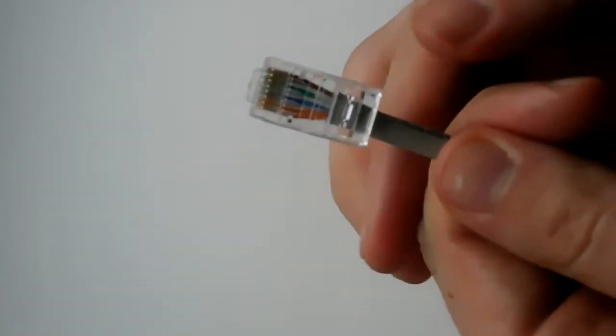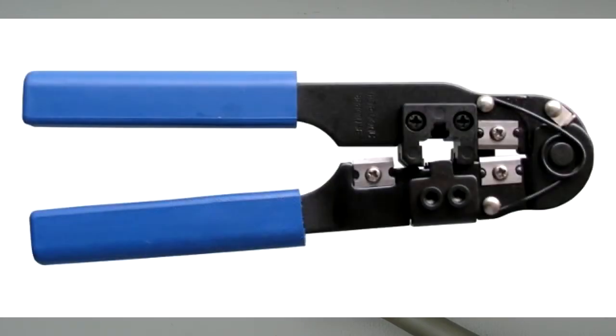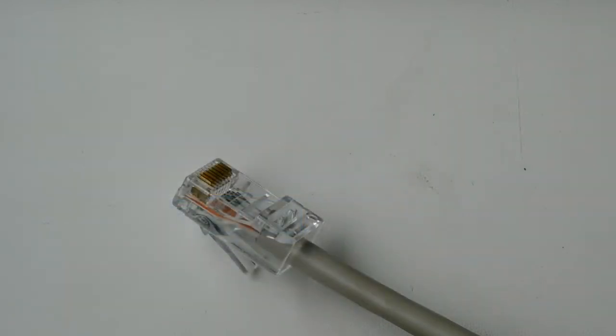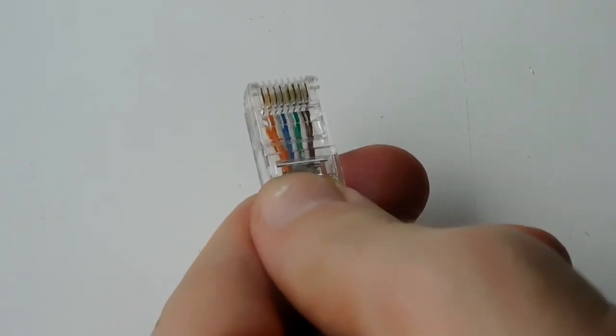And now you need to crimp. Specialists crimp cables with a special tool. But what's the sense to buy expensive tool and use it only one time? You can do this with a usual screwdriver. First with a screwdriver snap the chip and grip the cable.